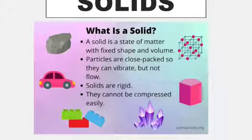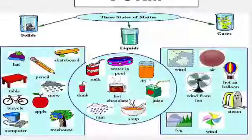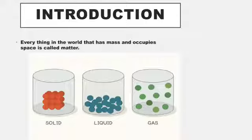What are solids? Solid is a state of matter with fixed shape and volume. Solid is a state of matter which has fixed shape and fixed volume. These particles are very close packed. They can vibrate, but they can't flow.